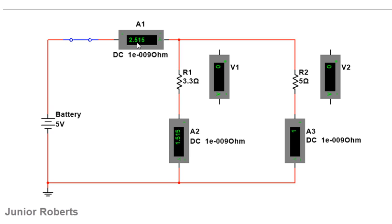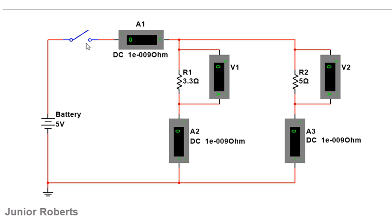I activate the simulation and close the switch. I can see that there is a current flow, so I know everything is working fine. I then turn off the circuit and connect the voltmeters. Voltmeter V1 will measure the PD across R1, and V2 measures the PD across R2. Now everything is connected: A1 measures current from the source, A2 measures current through R1, A3 measures current through R2, V1 measures PD across R1, and V2 measures PD across R2.